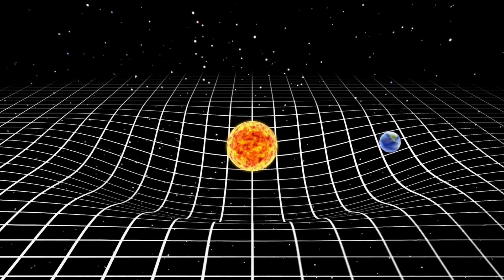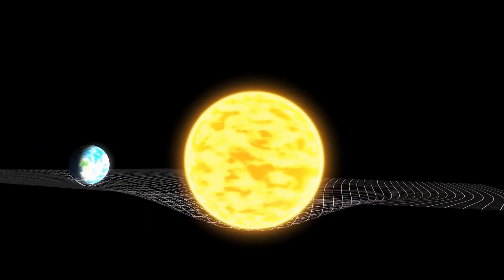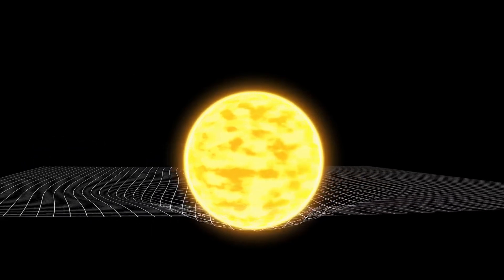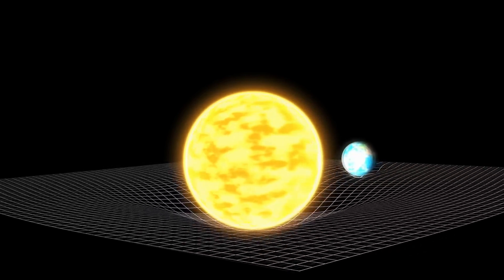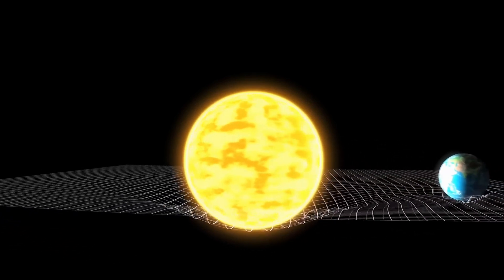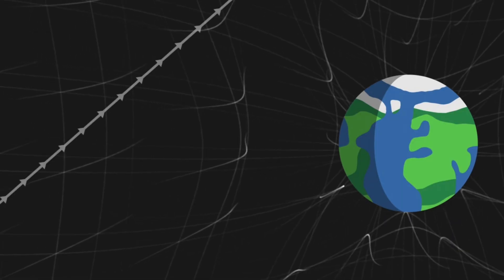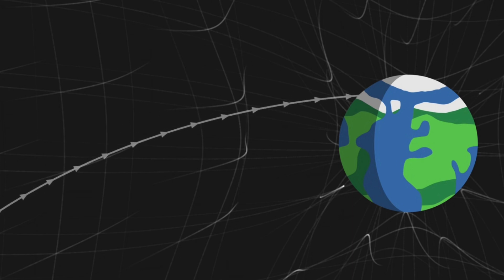Imagine space-time as a trampoline. If you place a heavy bowling ball, representing a star or planet, in the middle, the trampoline will sag. Now if you were to roll a marble, it would naturally move towards the bowling ball, not because the bowling ball is pulling it, but because of the curve it created in the trampoline.